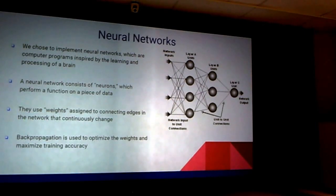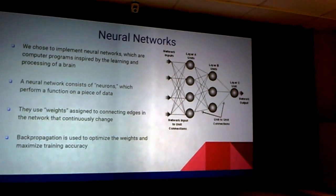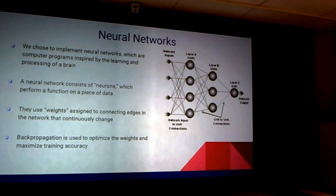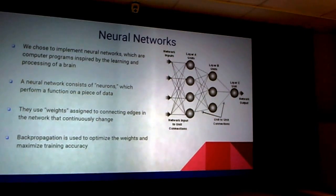They also use something called weights. Each connection in the network has a different weight, which represents the importance of the data processed through it, used to make future predictions. As the artificial neural network runs, it uses backpropagation to update its weights and minimize its loss. After each epoch — each run of the network — it adjusts the weights to make accuracy more efficient and minimize loss against the actual data.